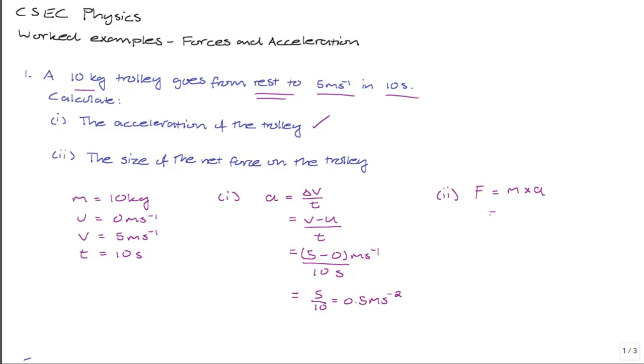So we know that the mass of the trolley is 10 kilograms, and we know that the acceleration is what we just found, 0.5 meters per second squared. When you work this out,